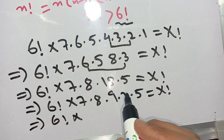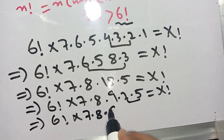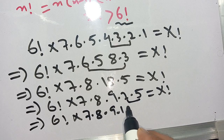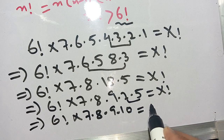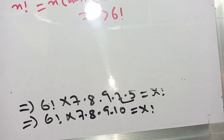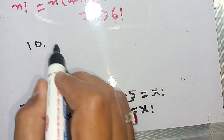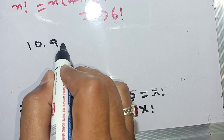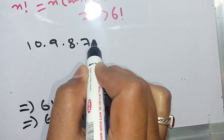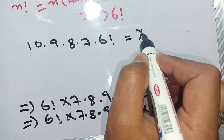We combine 5 times 2 and it becomes 10, so we have 7 times 8 times 9 times 10 equal to x factorial. Now we can rewrite this as 10 times 9 times 8 times 7 times 6 factorial is equal to x factorial.